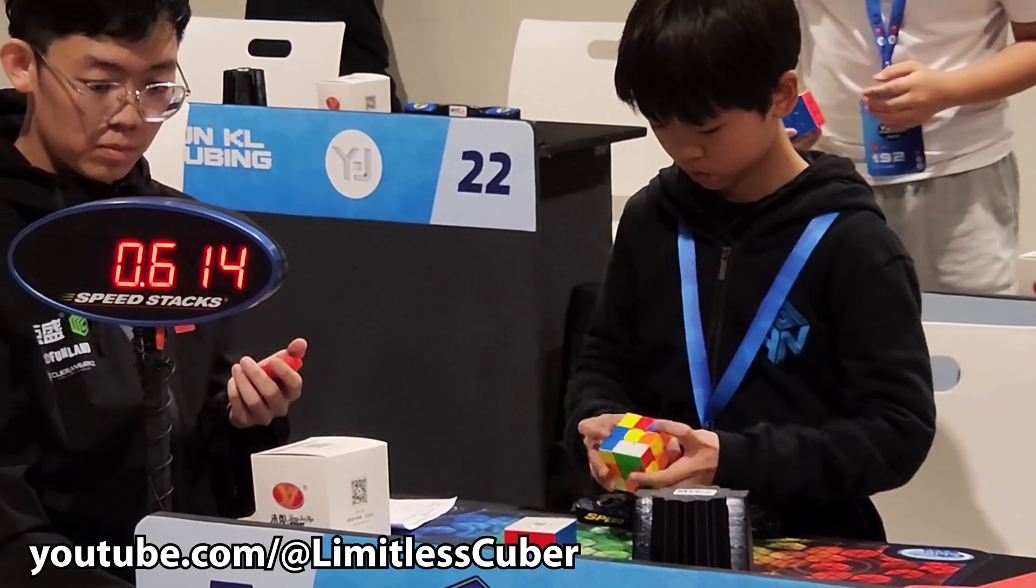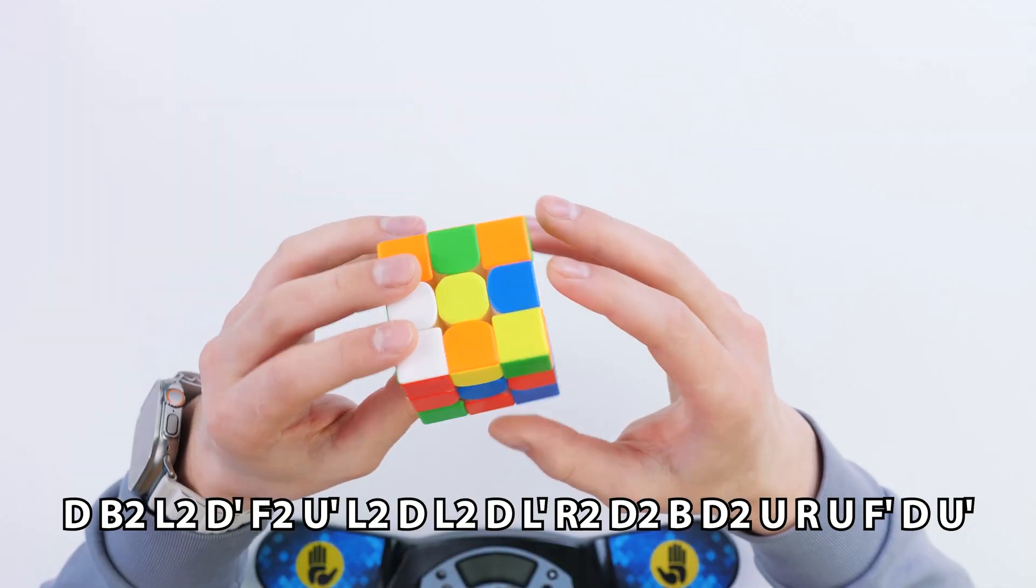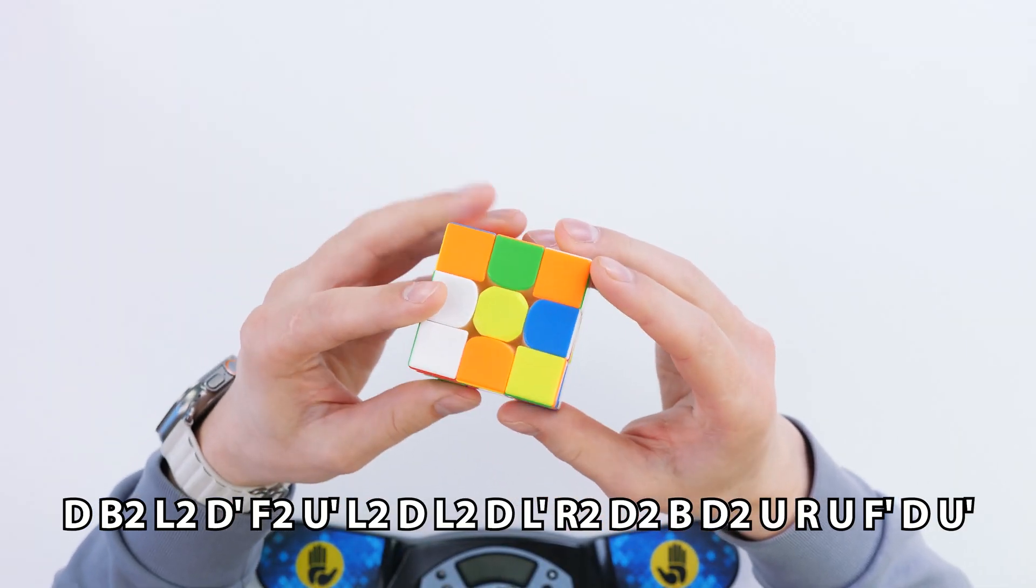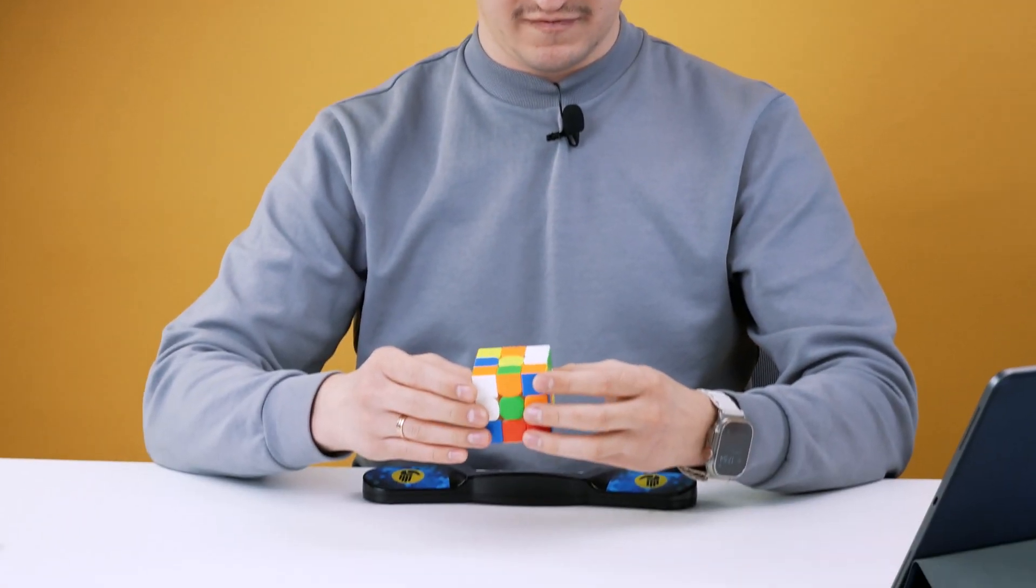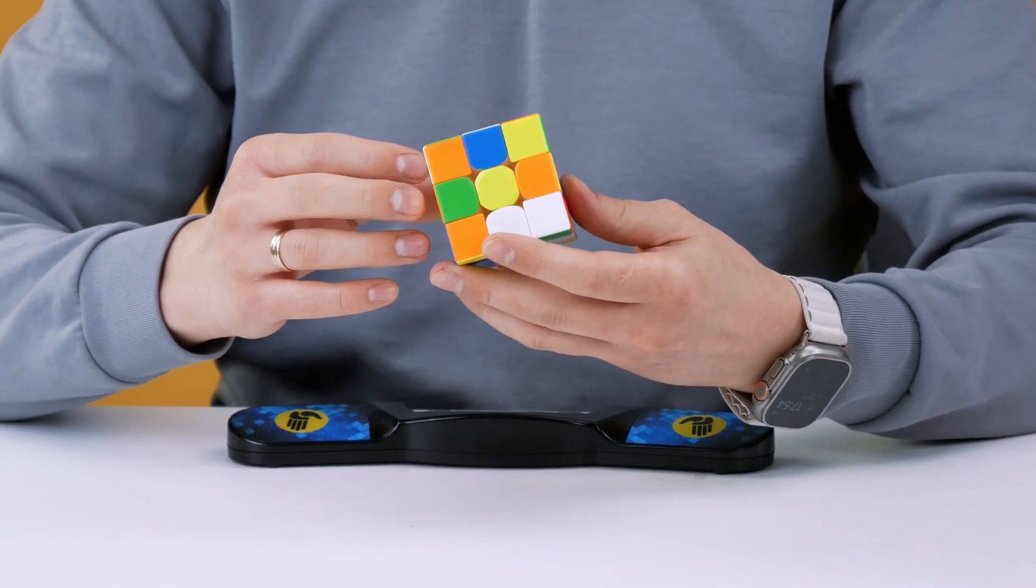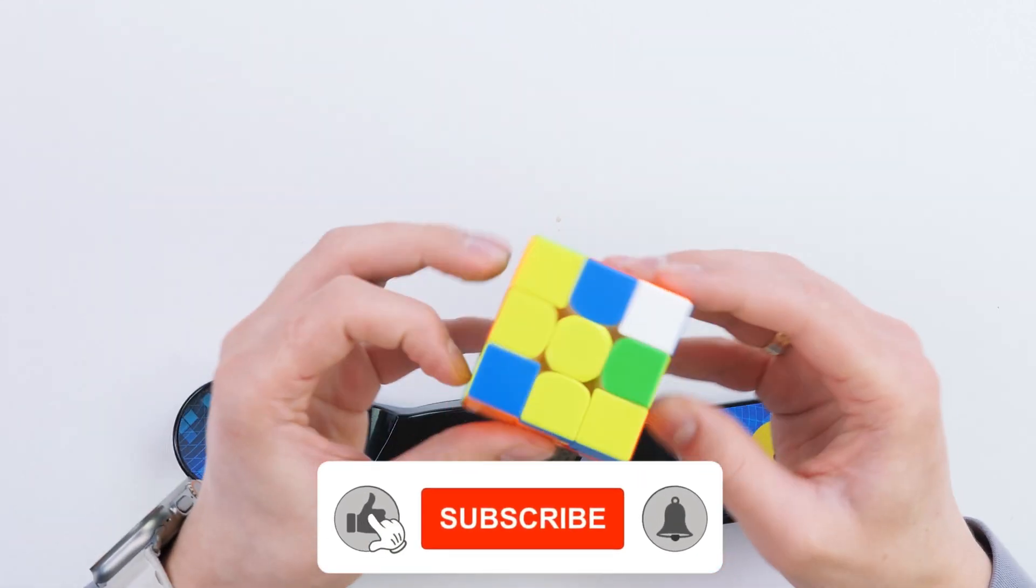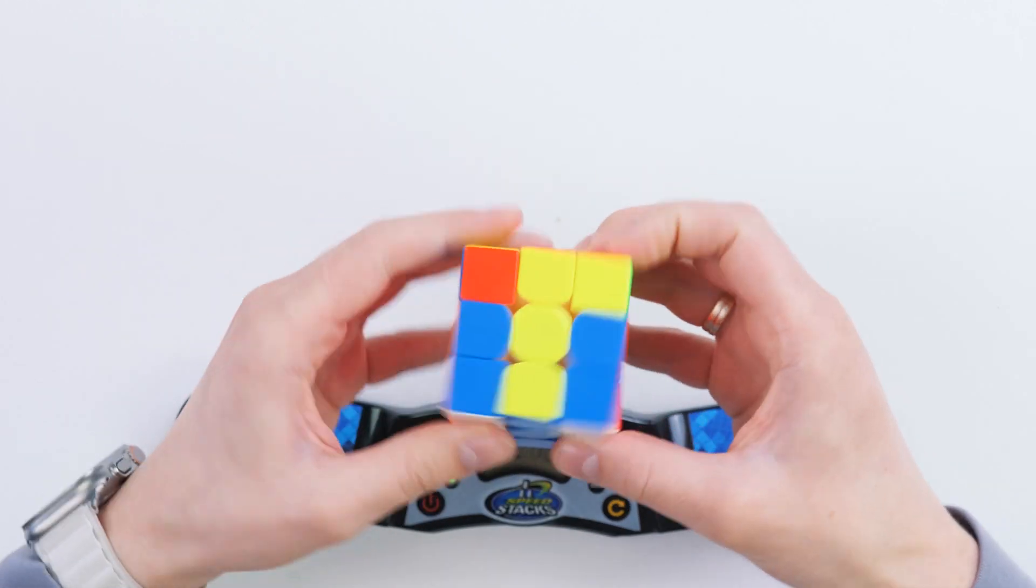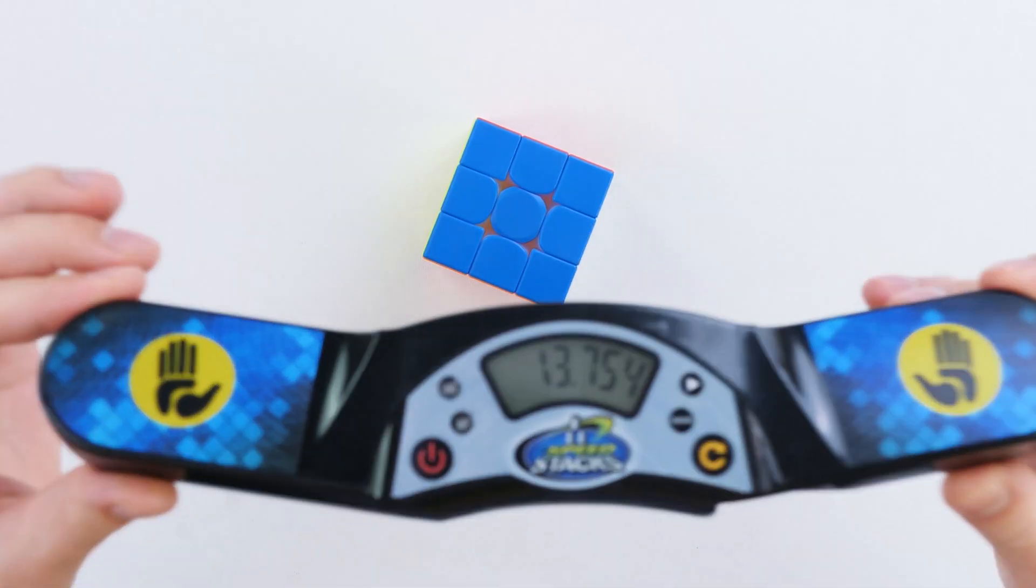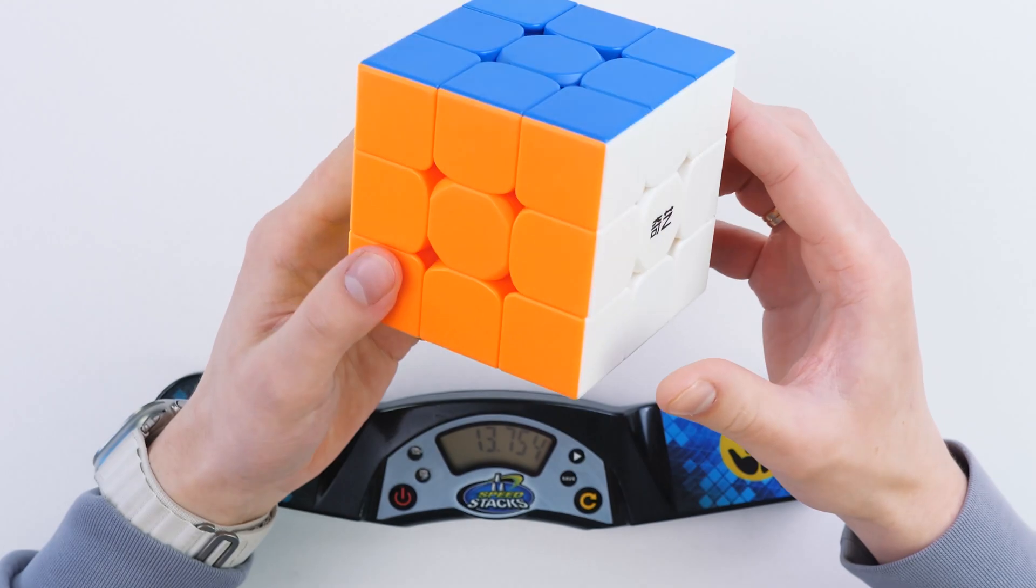Let's go to the fourth, the decisive solving in this average. I hope you have already scrambled the cube. I've already done it. Let's try to do the fourth solving of this world record. Let's see what will happen. It looks complicated, at least for me. 13.75, a little worse.